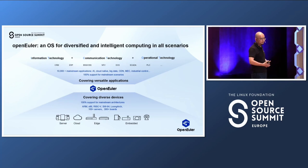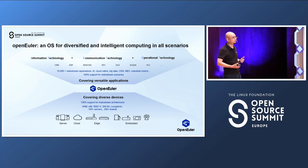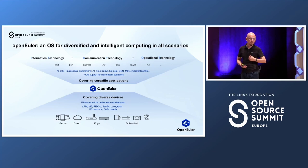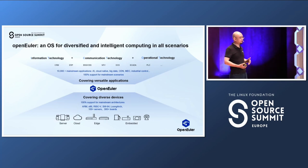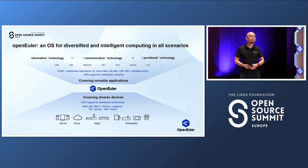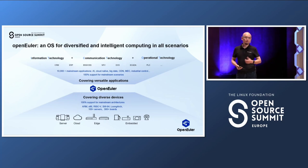For the hardware, we cover all these diversified devices. We support all mainstream CPU architectures, including x86 and ARM. We also support emerging hardware, including RISC-V and Loongson from China as well. We support quite a lot of types of servers and boards. But what really makes openEuler different from other operating systems is our goal to make an OS for diversified and intelligent computing in all scenarios.